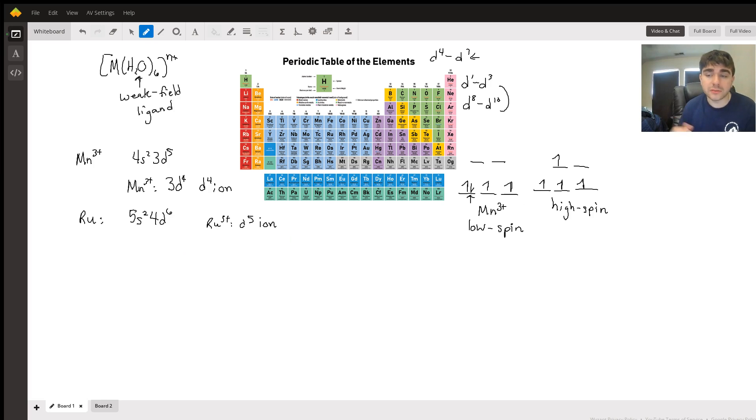Since D5 can also be multiple places. So D5 is 1, 2, 3, 4, 5. So this is if it's high spin for ruthenium.